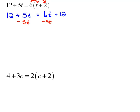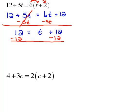But when we do that, I'm going to move the 5t over by subtracting 5t from both sides. So now we have 12 equals t plus 12. Now, t is almost alone. We need to remove this plus 12 by subtracting 12 on both sides to end up with 12 minus 12 is 0 equals t.